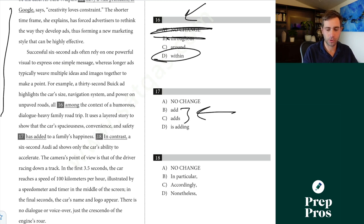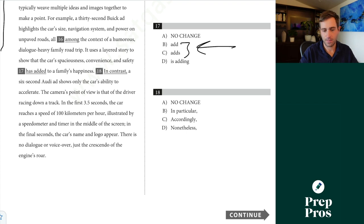We're seeing another subject verb agreement question. I can spot that by the pattern in the answer choices. Starting to read and understand the answer choices makes the SAT so much easier for you. Uses a layered story to show that the car's spaciousness, convenience, and safety. We'd have to say add because we have a plural subject here. This is our subject. You can plug in they. You would say they add. You wouldn't say has added. They have adds. They is adding. None of those make any sense.